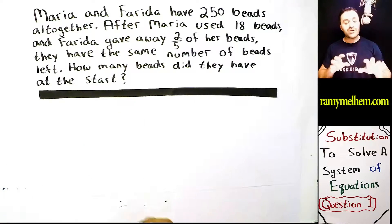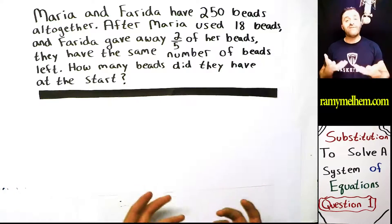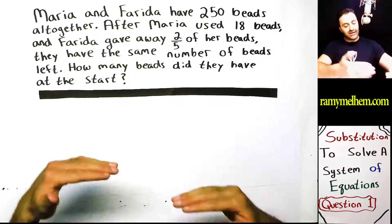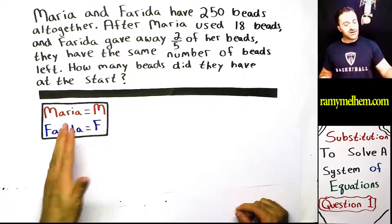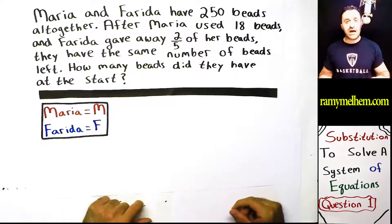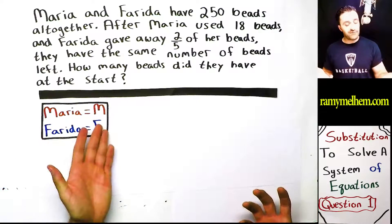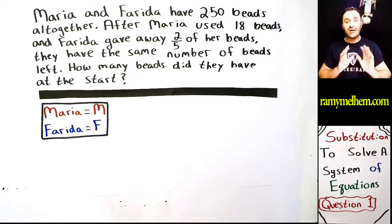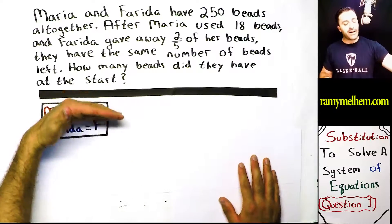We don't know how many they have. So in math, what do we do if we have unknown information? We pick variables. So we pick letters to stand for those numbers. So let's go ahead and do that first before we do anything else. That's going to be our first step. I thought it'd be convenient, since it's Maria's beads, to pick the letter M. That's how many beads she has. She has an unknown amount. We're going to call it M. Farida, her letter is F because that's her initial. Let's pick that as our variable. We could have picked X and Y, but let's pick these so we can keep track of them a lot easier.